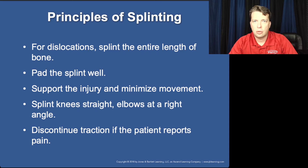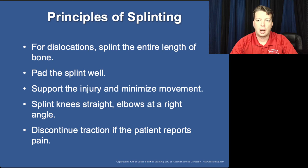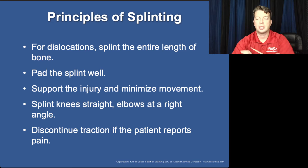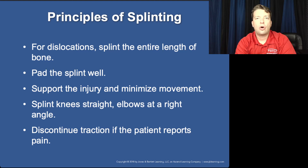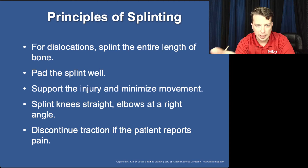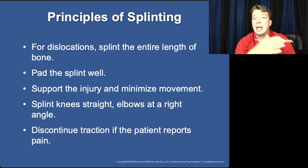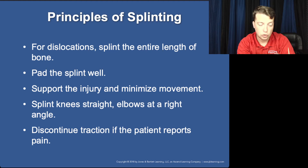We do want to pad the splint — we don't want to cause pressure injuries. If the patient has any dislocations, we need to splint the entire bone. Splinting the knee tends to be more effective in the extended or straight position; elbows are more easily splinted at a right angle. The whole point of the splint or traction is to reduce the patient's pain. So if pain is increasing after it has been applied appropriately, that's when you're going to need to remove that splint and try another option.